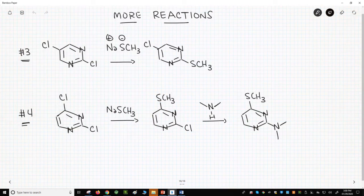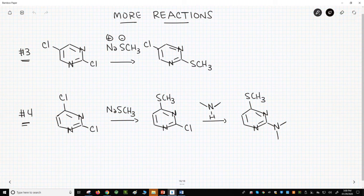These reactions show some interesting ideas. The top reaction involves 2,5-dichloropyridine. When reacted with a nucleophile like sodium methylthiolate, only the chlorine in the 2-position will react. That's the one between the two nitrogens.